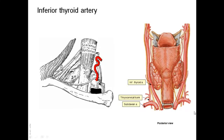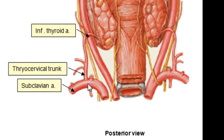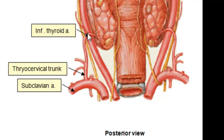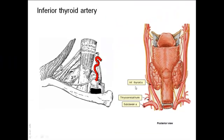The inferior thyroid artery is a branch of the thyrocervical trunk. Viewing from behind, the subclavian artery gives rise to the vertebral artery, the internal thoracic artery, and the thyrocervical trunk. The thyrocervical trunk gives branches including the suprascapular, transverse cervical, ascending cervical, and inferior thyroid arteries. The inferior thyroid artery has a long and tortuous course because during every swallow the thyroid gland ascends several centimeters, dragging its blood supply; without this tortuosity the artery would be traumatized.